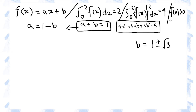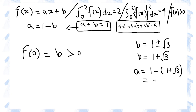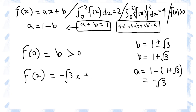Next, let's pay attention to the third condition, which says that f of 0 is positive. Substituting 0 into the function gives us b. So b must be 1 plus root 3, meaning that a is 1 minus (1 plus root 3), which is minus root 3. Therefore, f of x is minus root 3 times x plus (1 plus root 3).